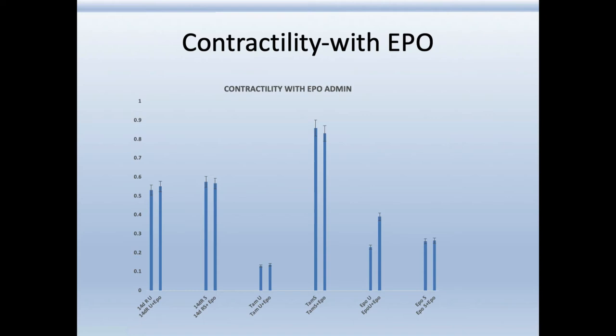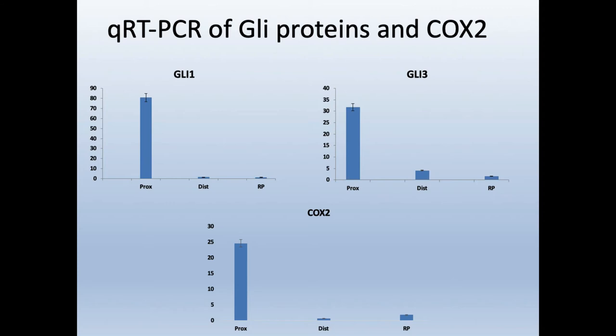We did quite a bit of RT-PCR. We've talked about the GLI proteins and their involvement in smooth muscle contractility in general, and our thoughts that they may play a role in smooth muscle contractility in the ureter. We also looked at several molecules involved in inflammation, like COX-2, as well as our GLI proteins. What we've seen in pigs stented for 14 days is that at the RNA level, the expression of GLI-1 and GLI-3 are associated with the expression of COX-2. We've also looked at IL-6. This idea of increased expression — at least at the RNA level — in the proximal ureter we thought was interesting.